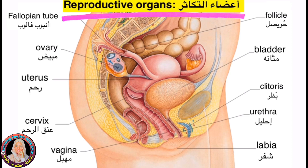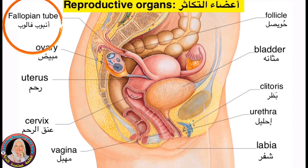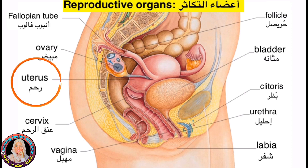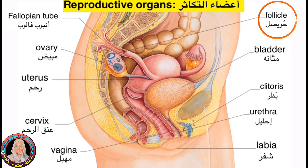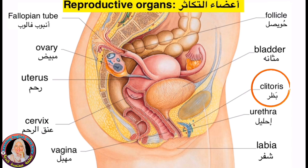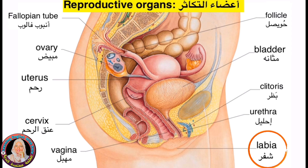Reproductive organs: fallopian tube, ovary, uterus, cervix, vagina, follicle, bladder, clitoris, urethra, labia.